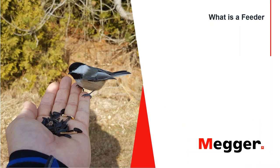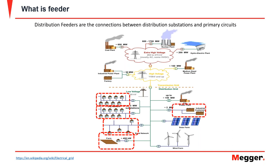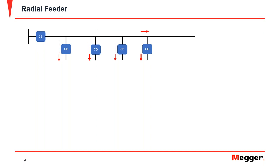In a distribution system, feeders are the connections between distribution substations and primary circuits, serving residential, industrial, or commercial customers. Radial feeders are the most common type, where every customer is connected downstream and there is no dual or multiple injection point into the feeder.